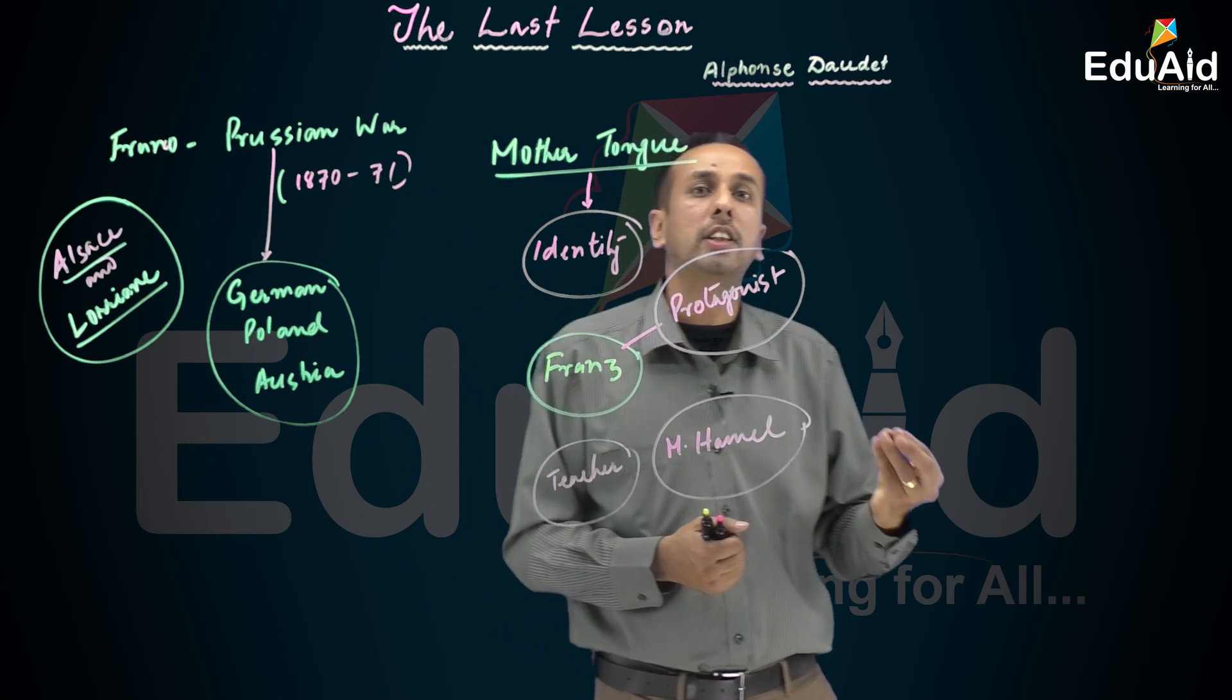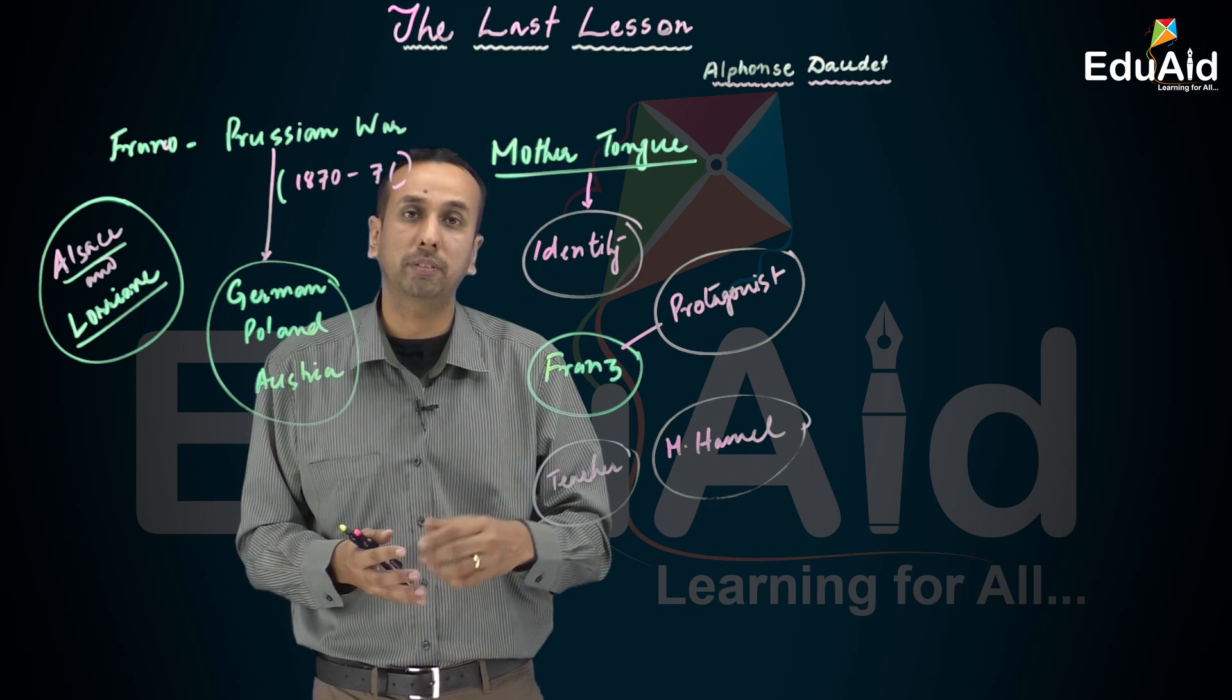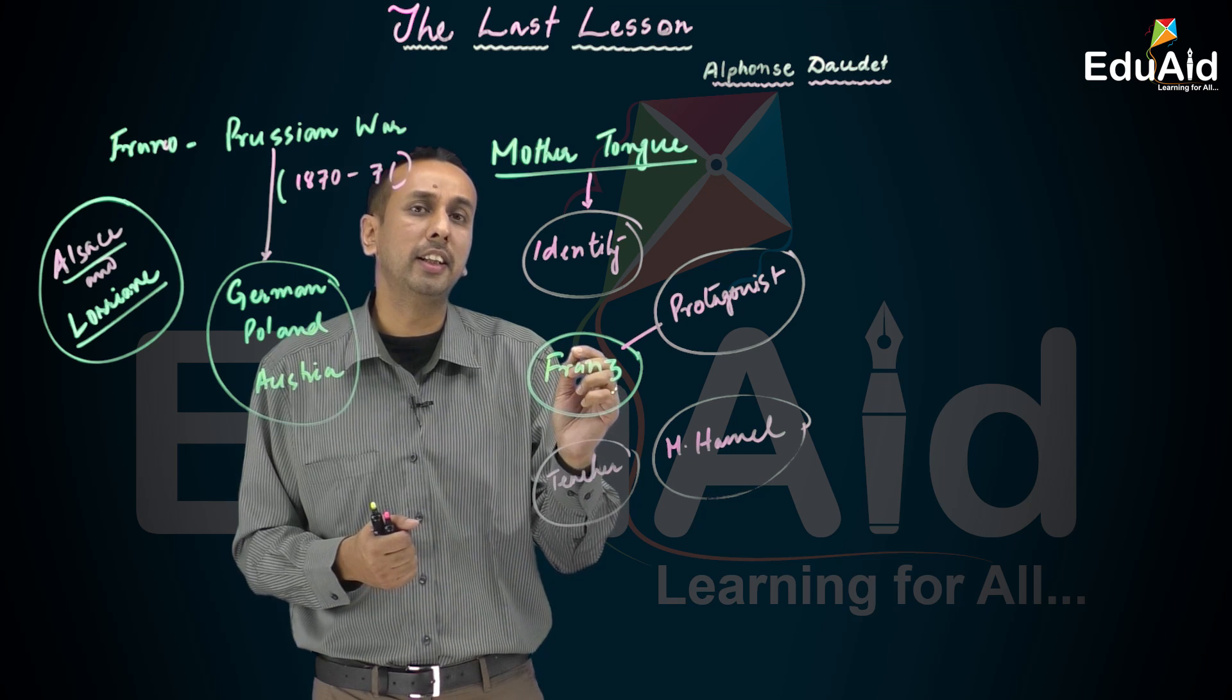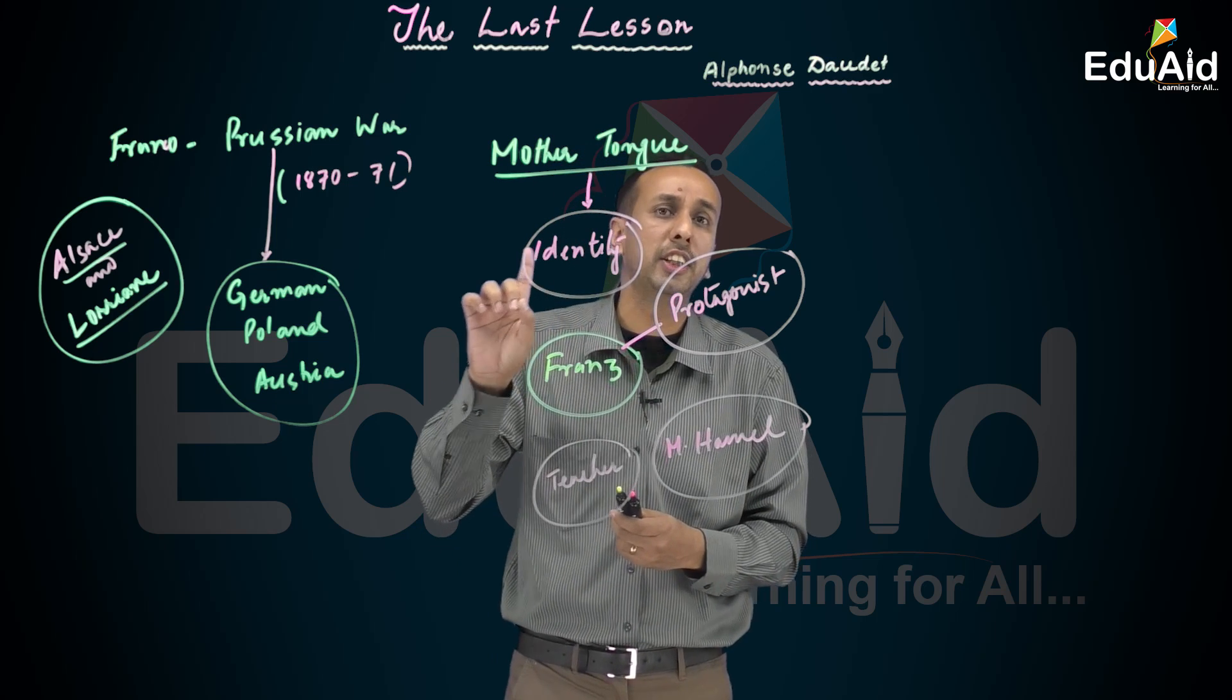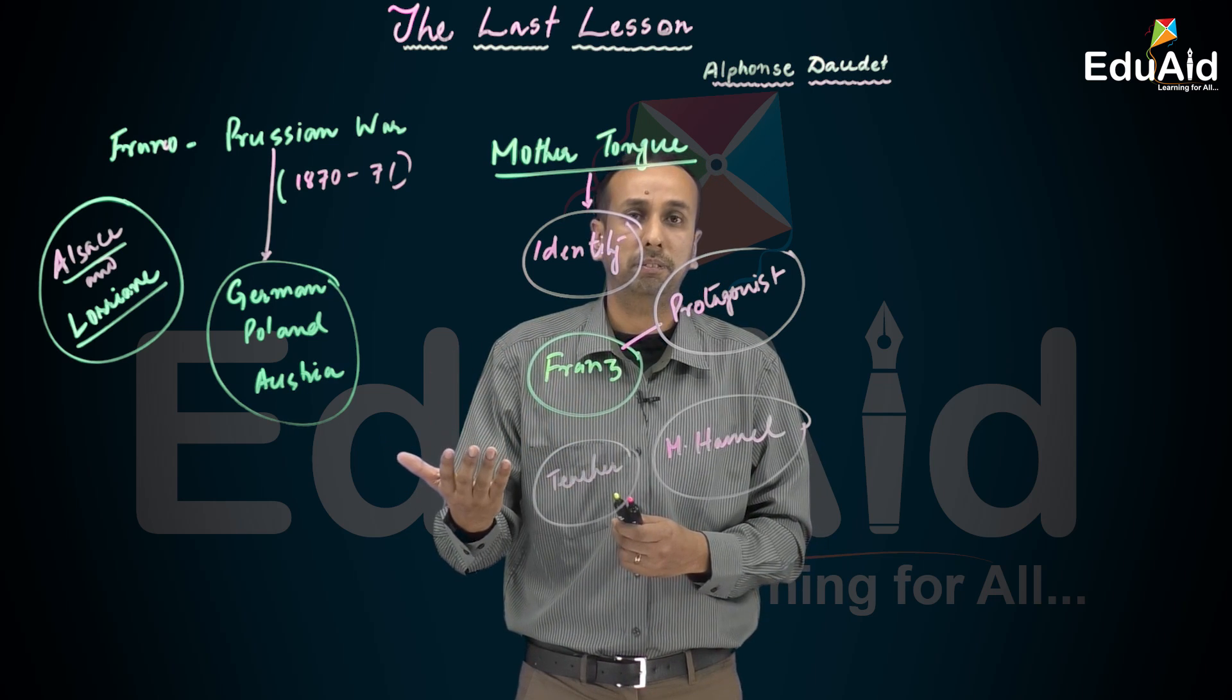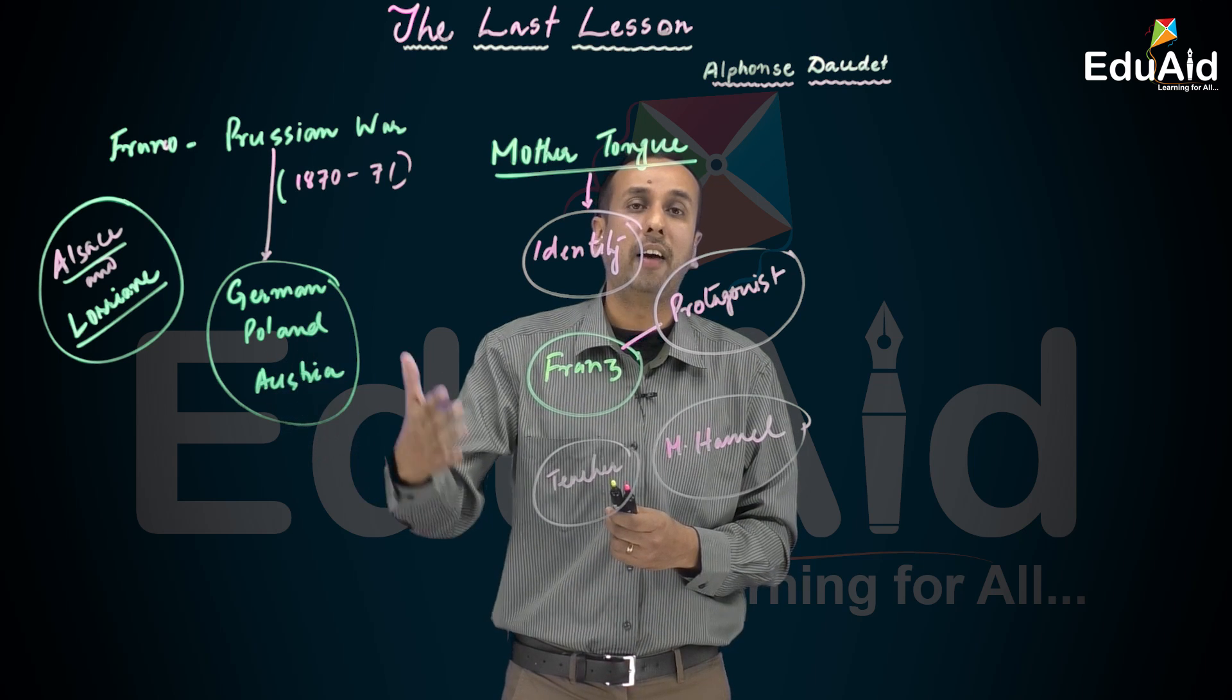M. Hamel said I'm not going to scold you. We all have a good deal to reproach ourselves. He said your parents were not anxious enough to see you educated. He also blamed himself, saying I often announced holidays when I wanted to go for fishing or gardening. After that, M. Hamel talked about the importance of French language with patriotic feeling. He said French language is the most beautiful, the clearest, the most logical language of all. It's our duty to safeguard our mother tongue. The mother tongue is the key. If a nation is enslaved, as long as they hold fast to their language, it's the key.